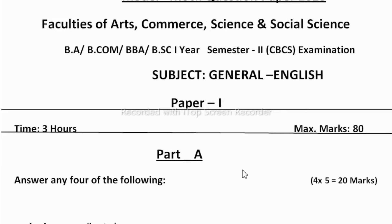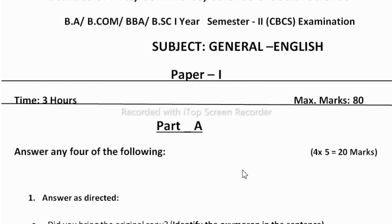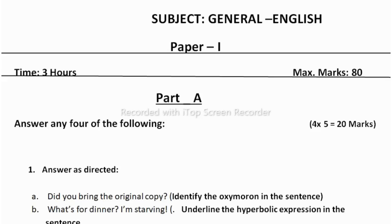As you have attempted semester 1, the same pattern you will get in semester 2 as well. You will be having Part A and Part B. Part A contains 20 marks and Part B contains 60 marks, making an 80 marks paper altogether. Time allocated is 3 hours. Under Part A you have to answer any 4 of the following questions, each carrying 5 marks, totalling 20 marks. There will be 6 questions in Part A and you are supposed to do any 4 out of those 6.